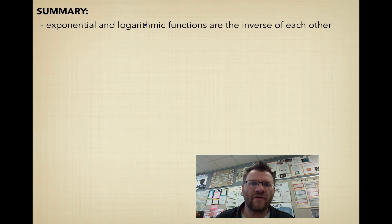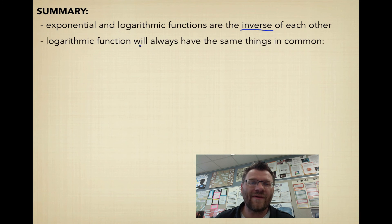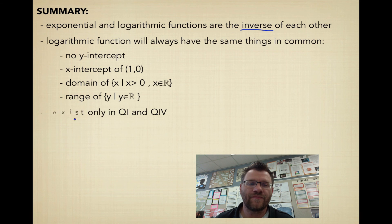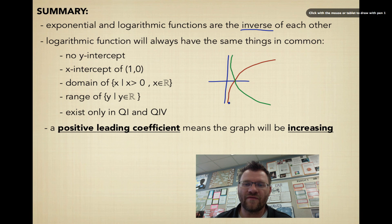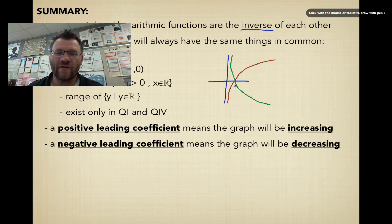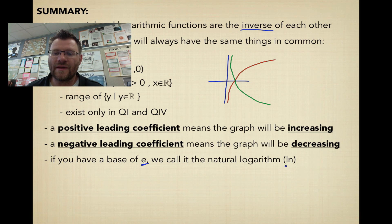So in summary, exponential and logarithmic functions are the inverse of each other. That's a key thing to know. Logarithmic functions will always have the same things in common. It'll always have no y-intercept. There will always have an x-intercept of (1, 0). The domain of it will always be x is greater than 0, and the range of it will always be everything, y∈ℝ. And they will only exist in quadrants 1 and 4, so they'll either be increasing or they will be decreasing, but they'll always look the same way, always in quadrants 1 and 4. A positive leading coefficient means the graph is increasing. That's the red graph that I drew there. And a negative leading coefficient means the graph will be decreasing. That's the green graph. And if you have a base of e, we just call that the natural logarithm. So if you see ln popping up anywhere, or this letter e, that's only because it has a special base, and that base is approximately 2.71. And we call it the natural logarithm because the base isn't 10, the base is e.